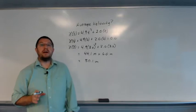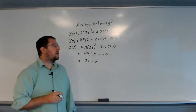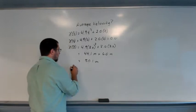So the object has traveled 50.1 meters in the three-second time interval. So now to calculate the average velocity.